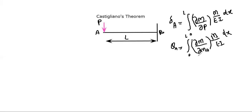As we discussed this formula yesterday, M is the bending moment of the beam, and MA is the bending moment applied at end A. But at end A, we do not have any external bending moment. So this becomes a problem — how can we take the derivative of M with respect to MA when MA is equal to zero?